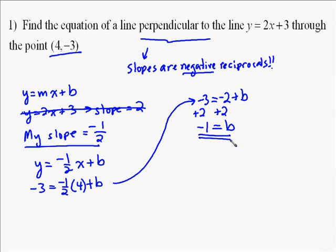So my answer is y equals negative 1 half x, because that's the slope, and then the y-intercept we discovered would be negative 1.